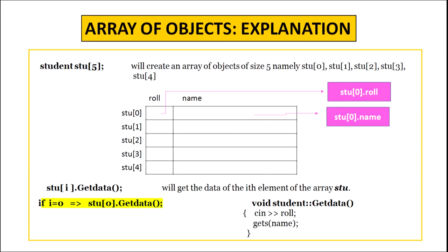The memory diagram shows that when we write student stu[5], this creates an array of objects of size 5: stu[0], stu[1], stu[2], stu[3], and stu[4]. Each array element has two data members: role and name. When we write stu[i].get_data, it gets the data of the ith element. For example, if i is 0, the statement becomes stu[0].get_data; the get_data function is invoked for object stu[0], and whatever values we input for role and name are stored in stu[0].role and stu[0].name.